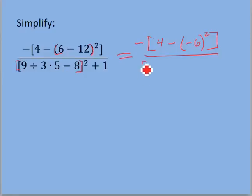So, 9 divided by 3. So, it's going to be 3 times, and this is going to stay 5 minus 8. That's all in brackets, getting squared, plus 1.